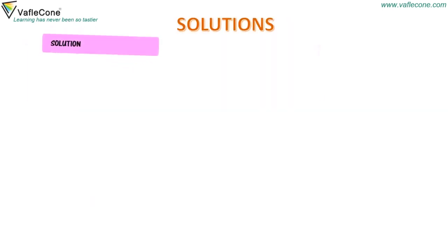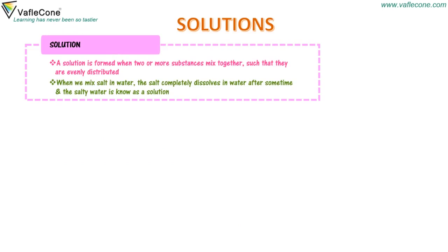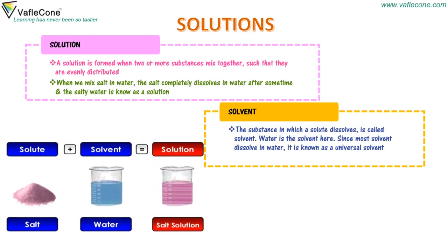Solution. A solution is formed when two or more substances mix together such that they are evenly distributed. When we mix salt in water, the salt completely dissolves in water after some time, and the salty water is known as a solution. Solvent. The substance in which a solute dissolves is called a solvent. Water is the solvent here.